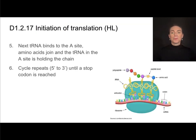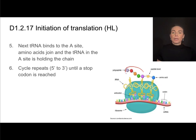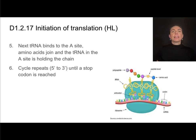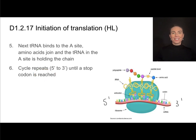You already know the rest of the story from the standard level content. The next tRNA will bind at the A-site. We'll get a transfer of the polypeptide chain through the synthesis of a peptide bond. This cycle will repeat, moving down the mRNA in a 5' to 3' direction until a stop codon is reached.